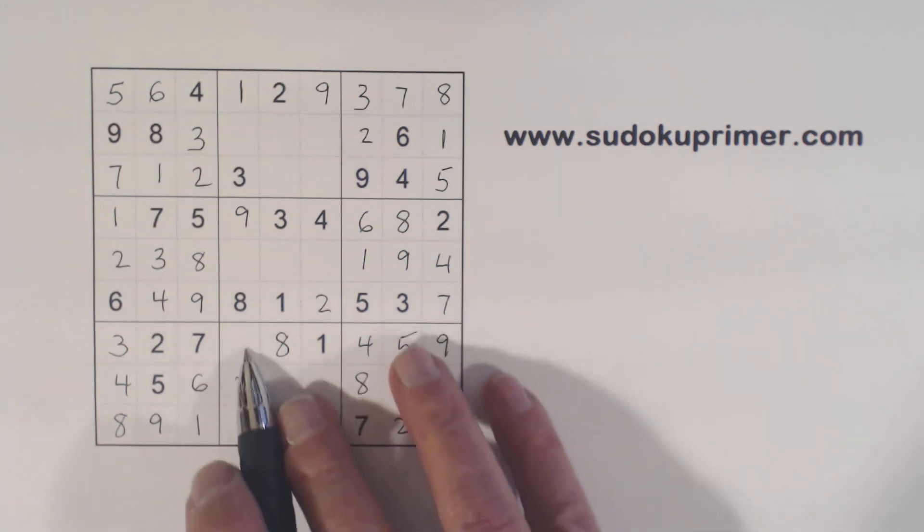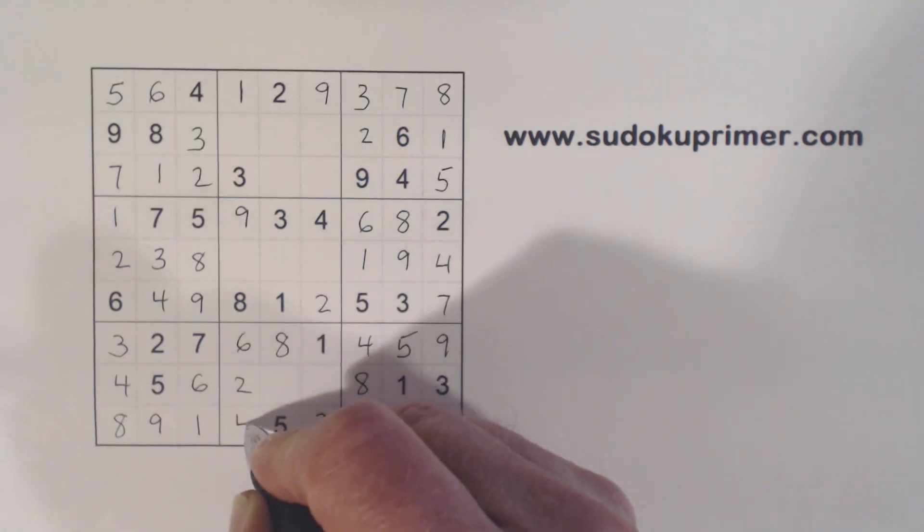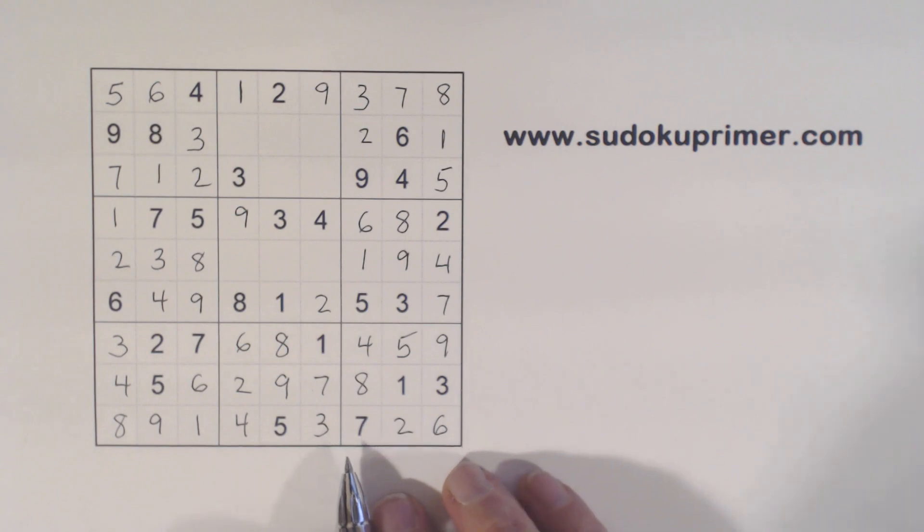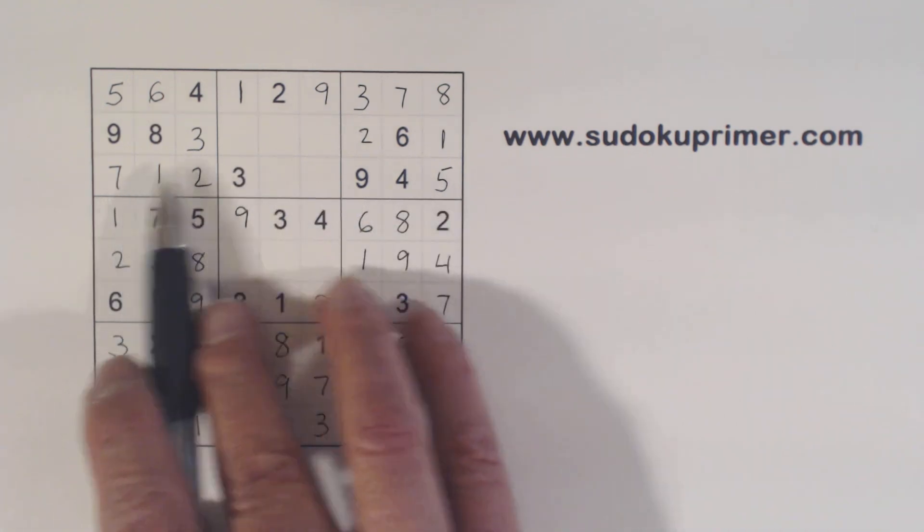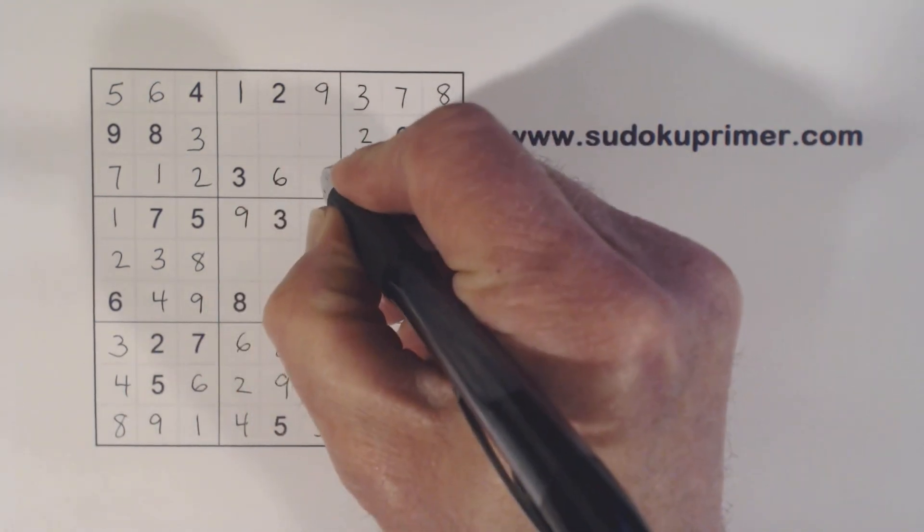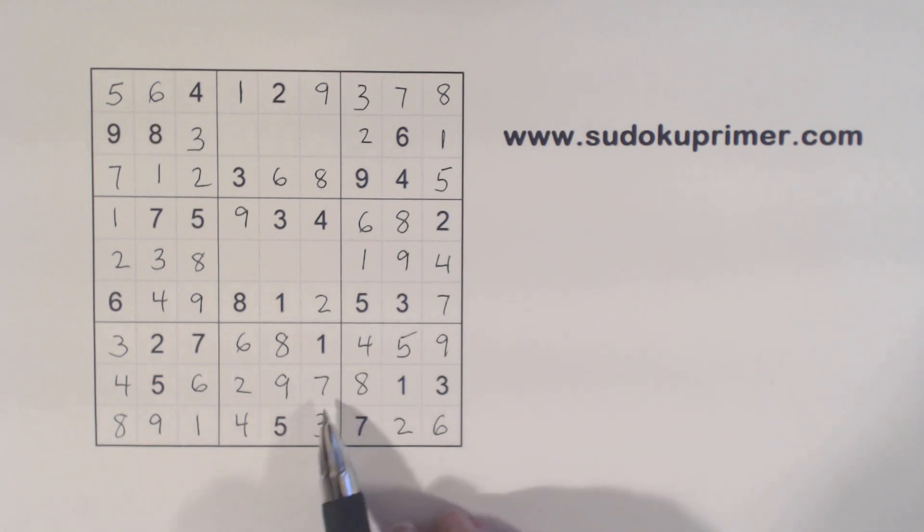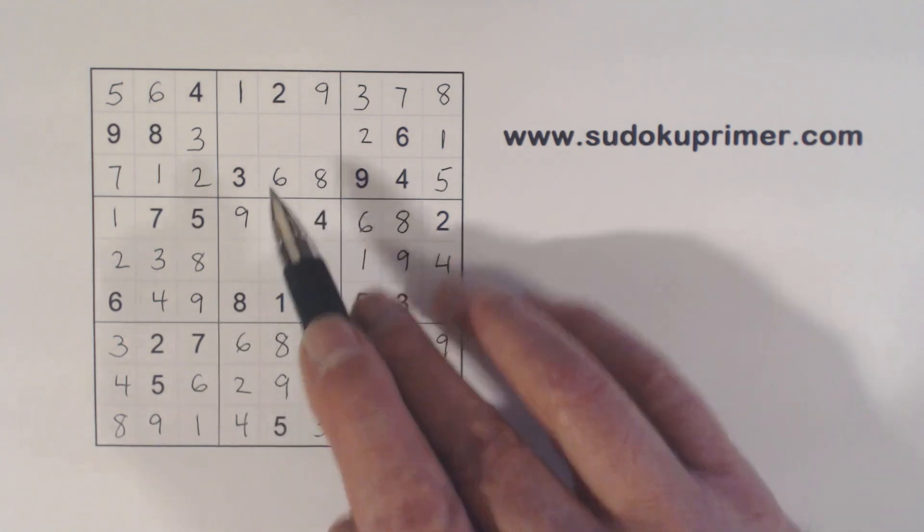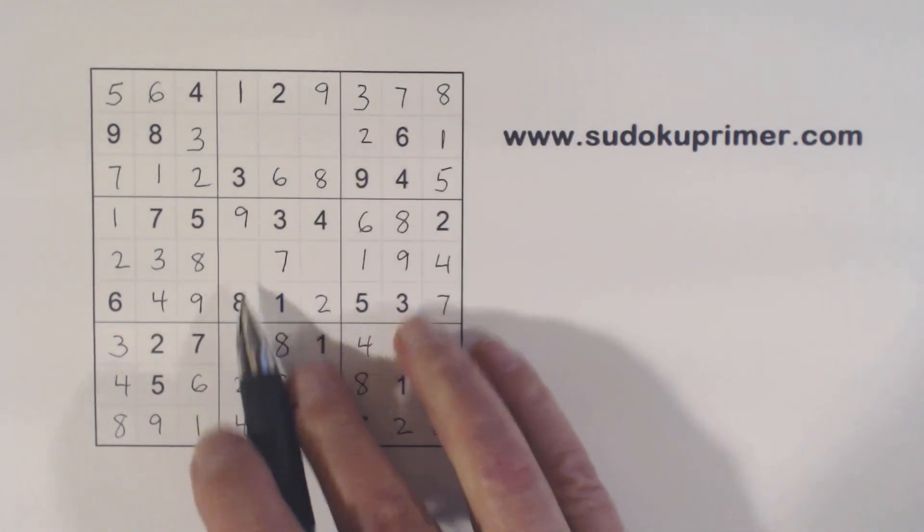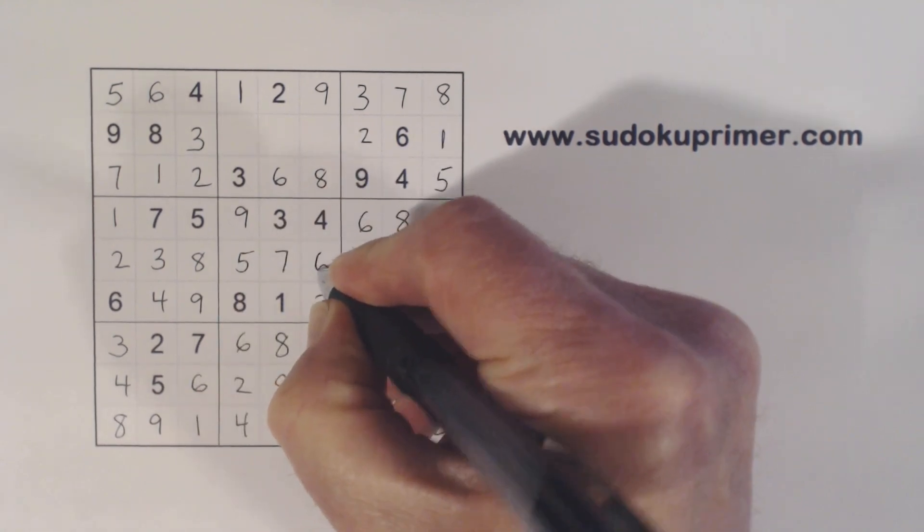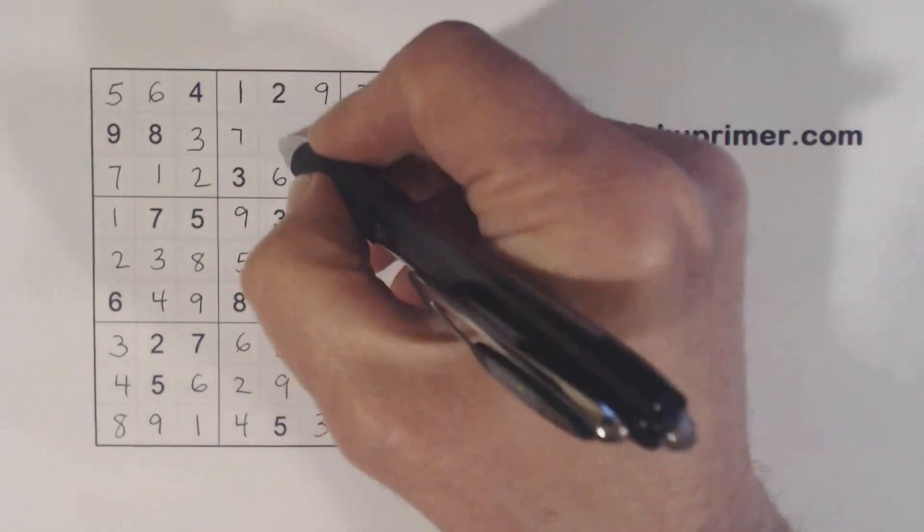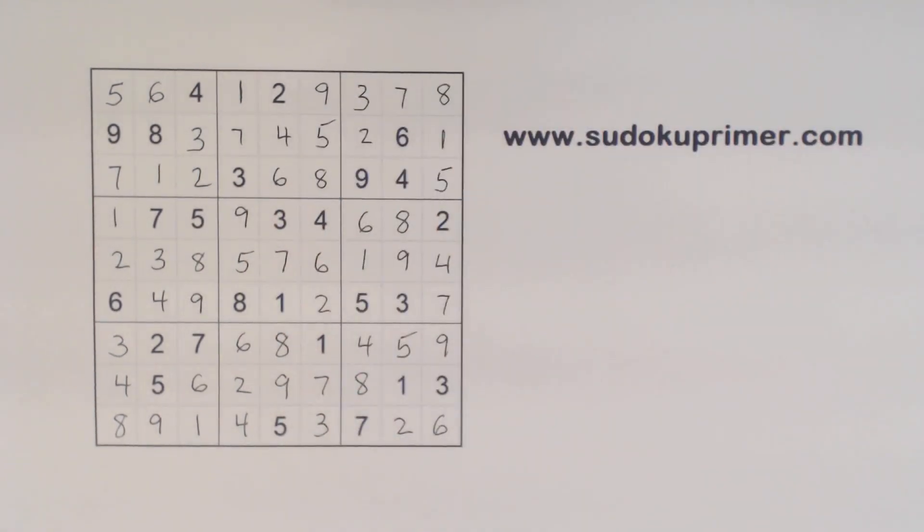Remember our 4, 6 and 7, 9 twins here. We can finish those. Now we're only missing 6, 8 here and 6 and 8 there. We can fill those in. And now we've got 5, 6 and 7 here. So 5 and 6, that's a 7. And we're missing 4, 5, 7 there. And we've got it.